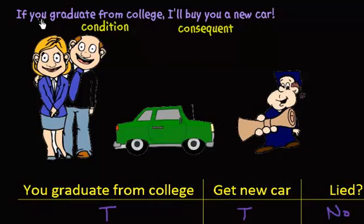Okay, so we have the following statement: if you graduate from college, I'll buy you a new car. So we have the condition, you graduate from college, and we have the consequent, I'll buy you a new car.